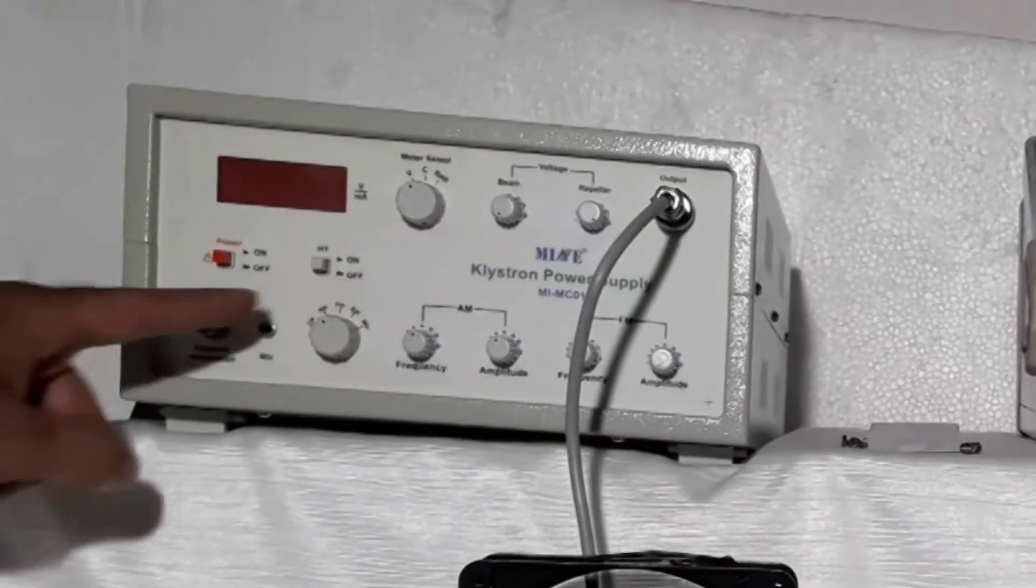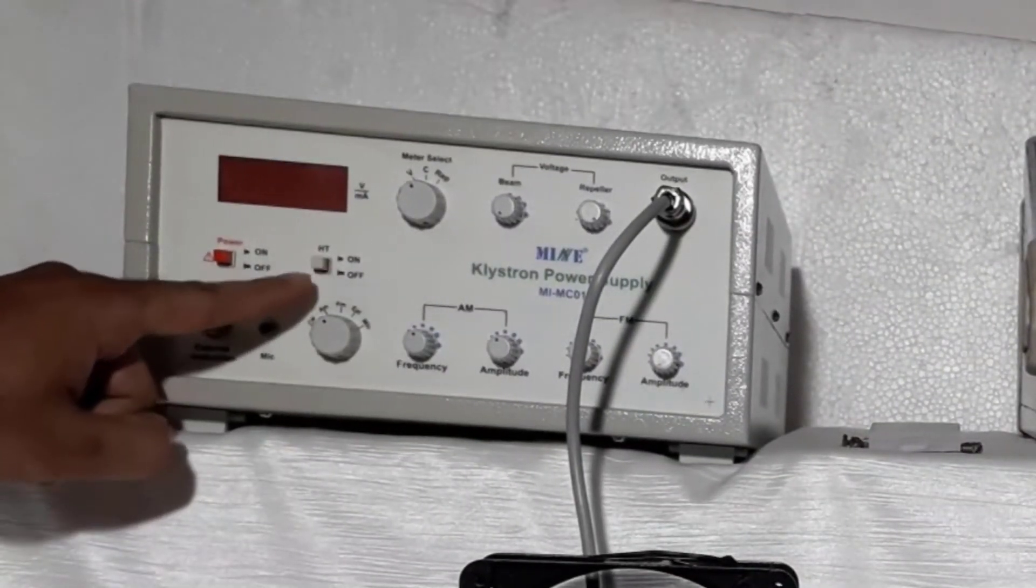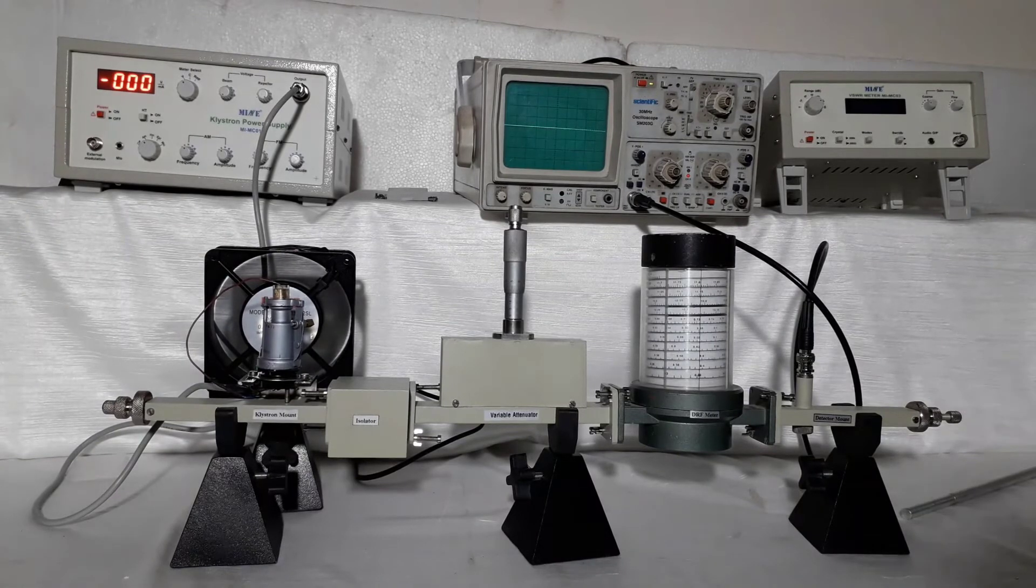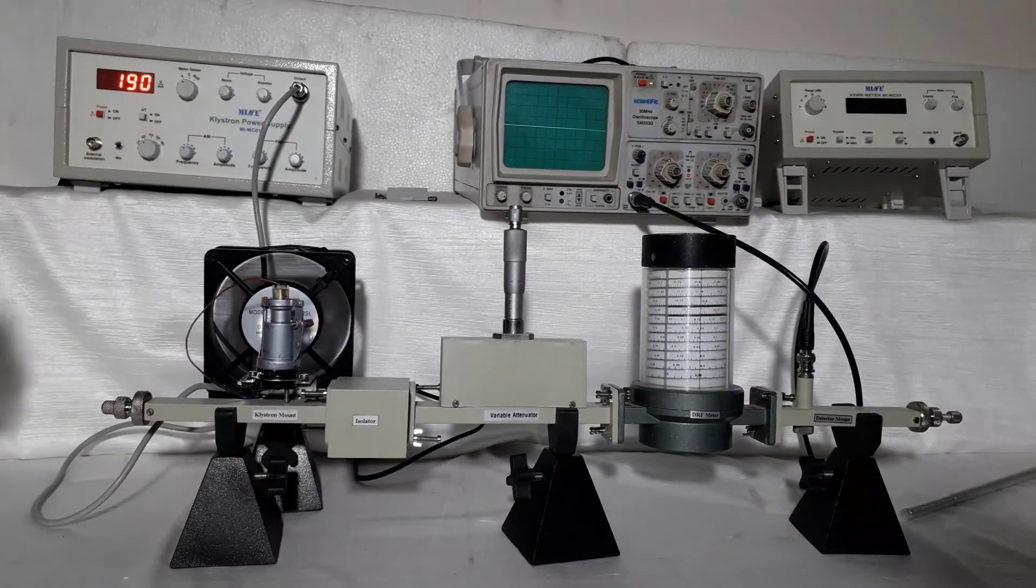Ensure that HT is at off position. Now power on klystron power supply and CRO. Now keep HT is at on position.